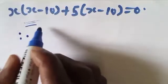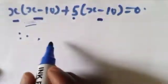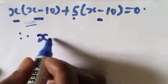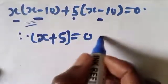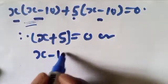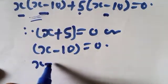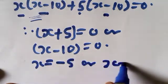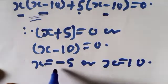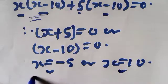Therefore we have (X plus 5) equals 0 or (X minus 10) equals 0. This gives X equals minus 5 or X equals 10. Now we need to check which of these satisfies the given equation. X equals minus 5 satisfies the given equation, while X equals 10 does not satisfy the given equation. Let's check.